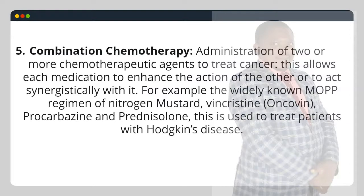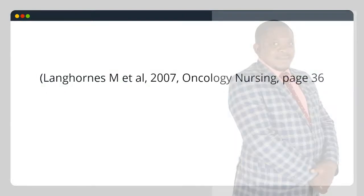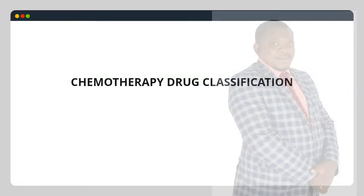For example, the widely known MOP regimen of nitrogen mustard, vincristine (oncovin), procarbazine, and prednisolone is used to treat patients with Hodgkin's disease. 6. Myeloablative therapy: dose-intensive therapy used in preparation for peripheral blood stem cell transplantation. (Langhorne M. et al., 2007, Oncology Nursing, page 36.)